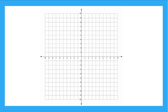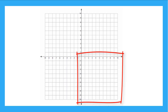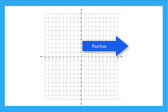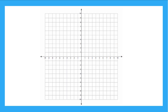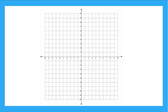Lastly, let's take a look at quadrant 4. The x-axis is the horizontal line, but just like in quadrant 1, the x-coordinates are all positive numbers. The y-axis is the vertical line that points down. So all the y-coordinates in quadrant 4 are negative. So this tells us that the ordered pairs that live in quadrant 4 will be positive x, negative y.